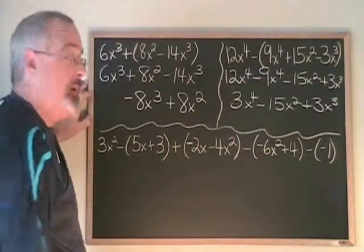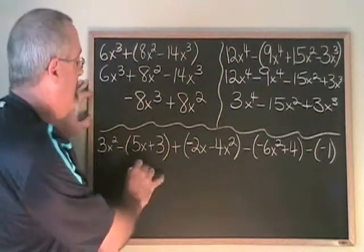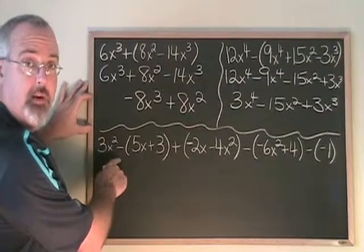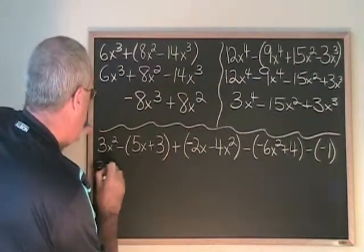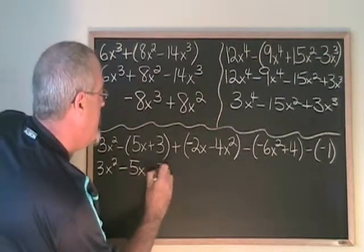Here's a long one, but it doesn't really make it any harder because we do the same technique. We just work with the brackets one at a time. Removing the first bracket, which has a minus sign before it, we get 3x² minus 5x. Minus plus means minus 3.